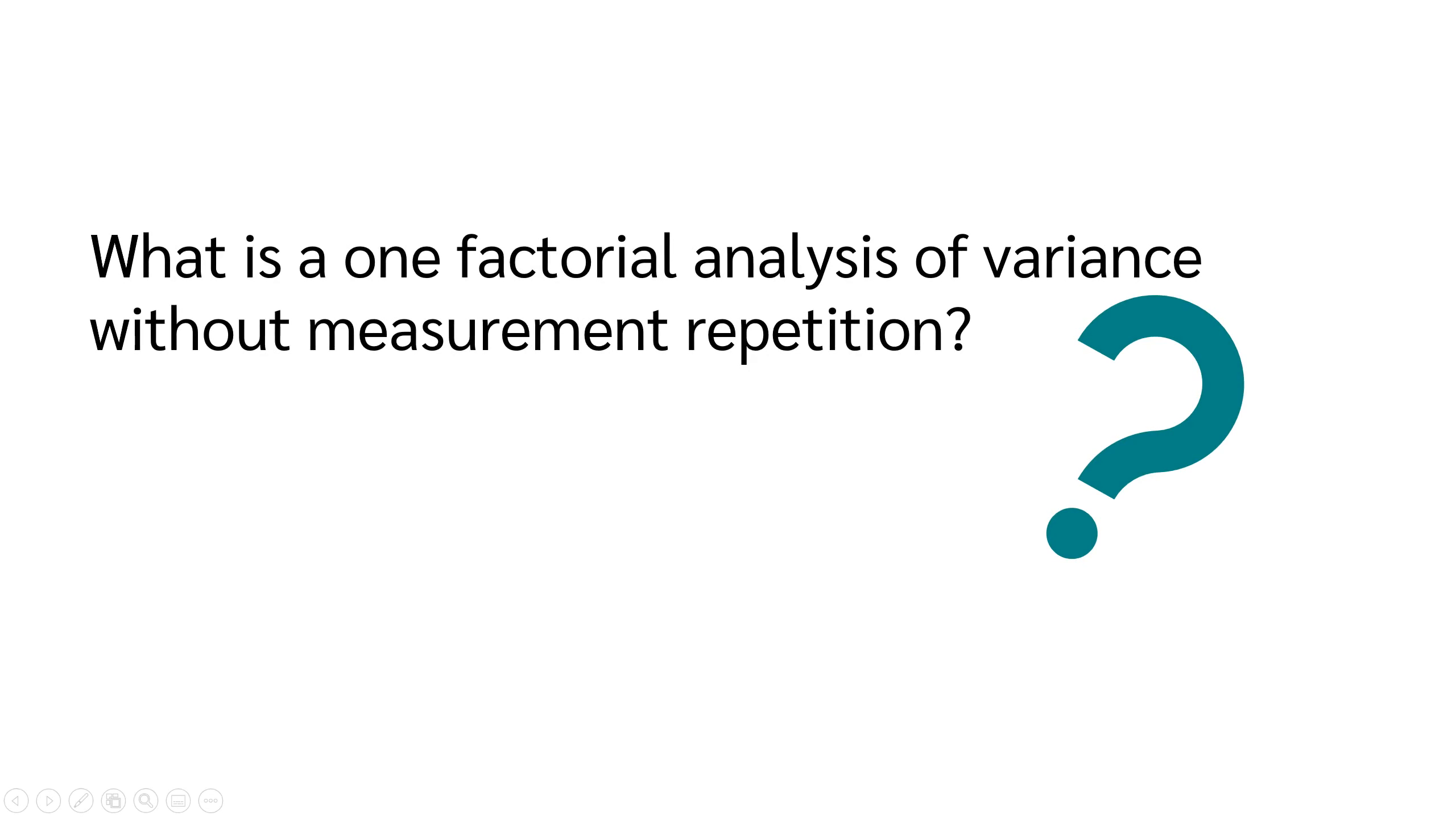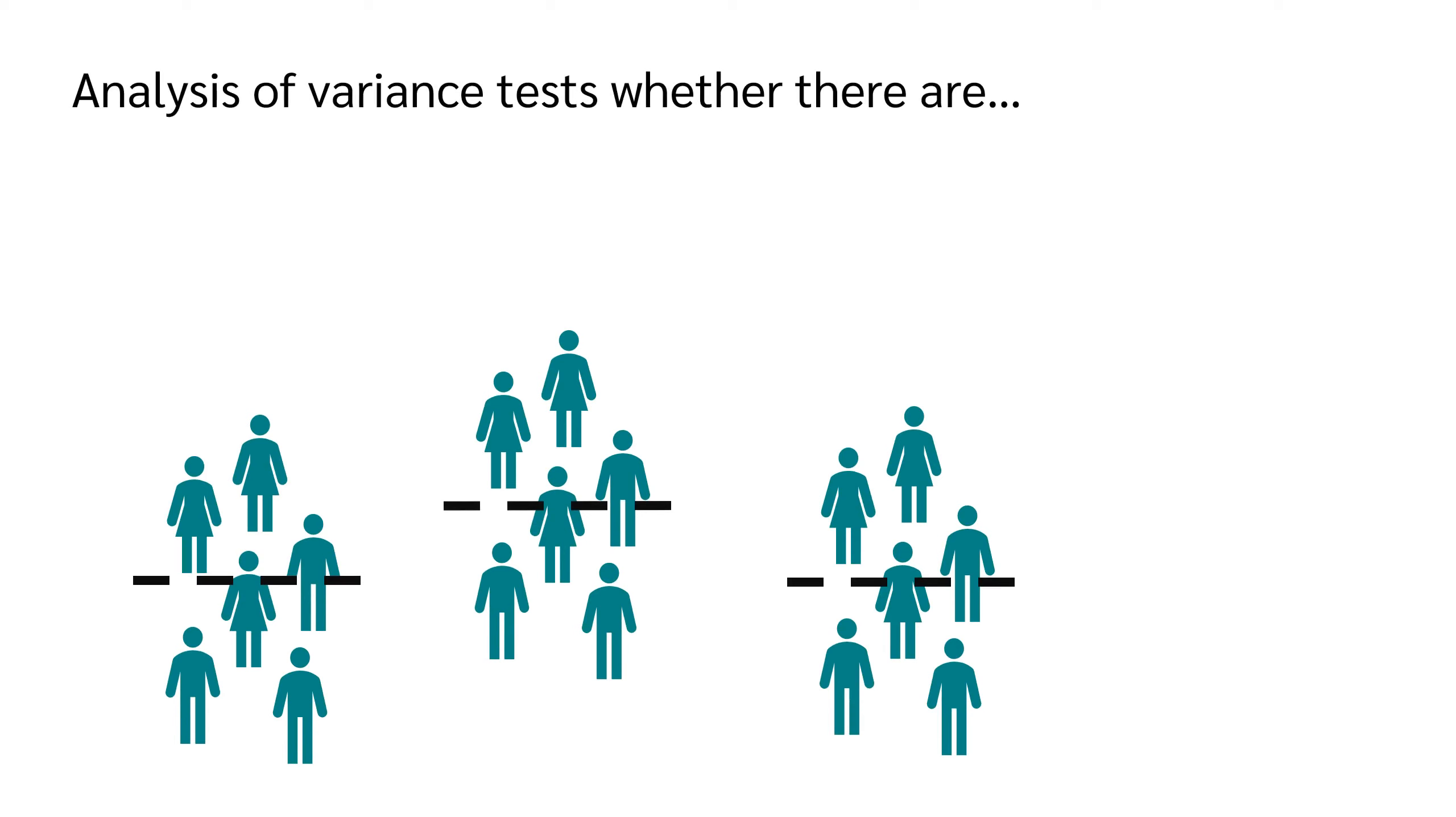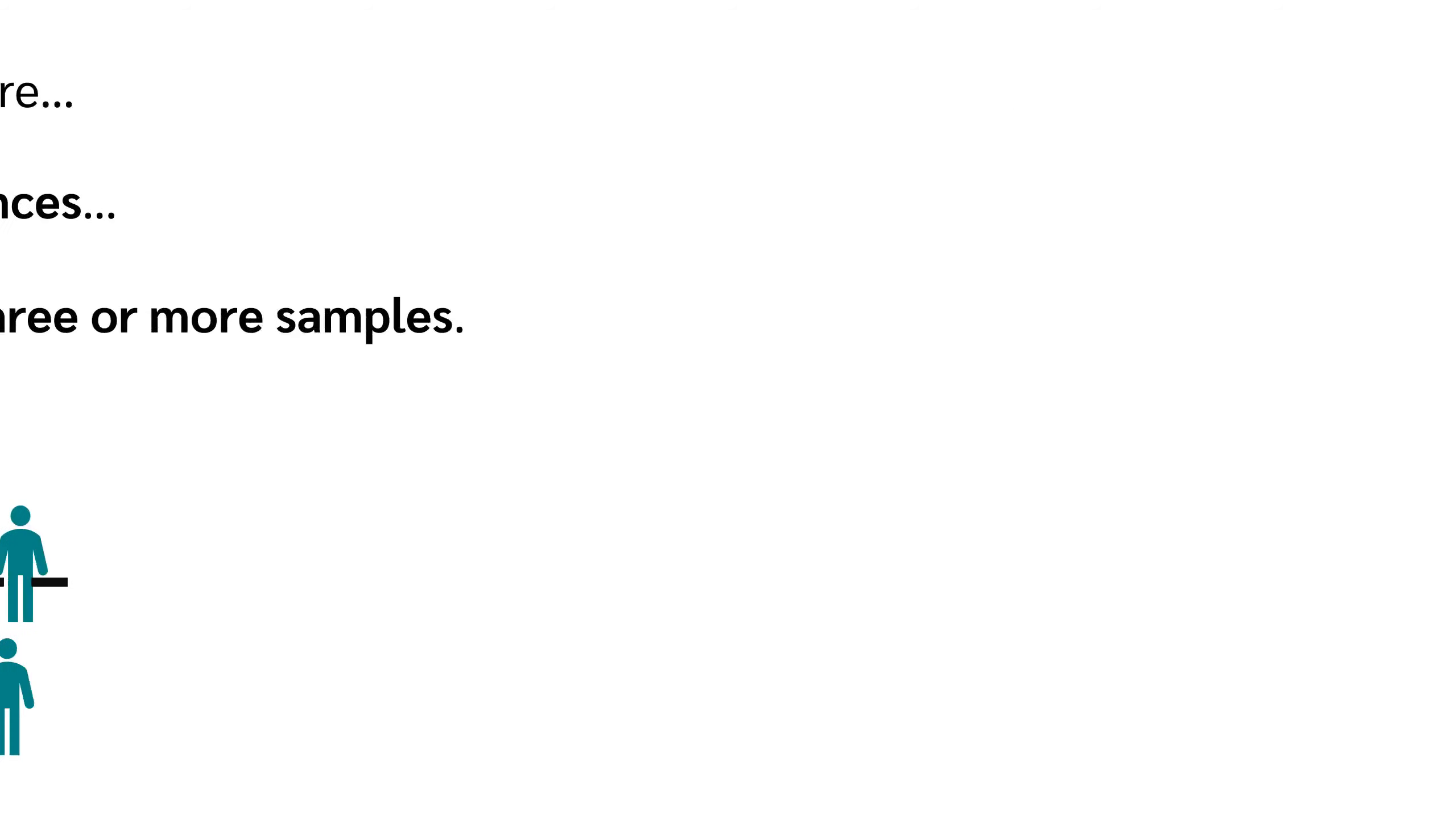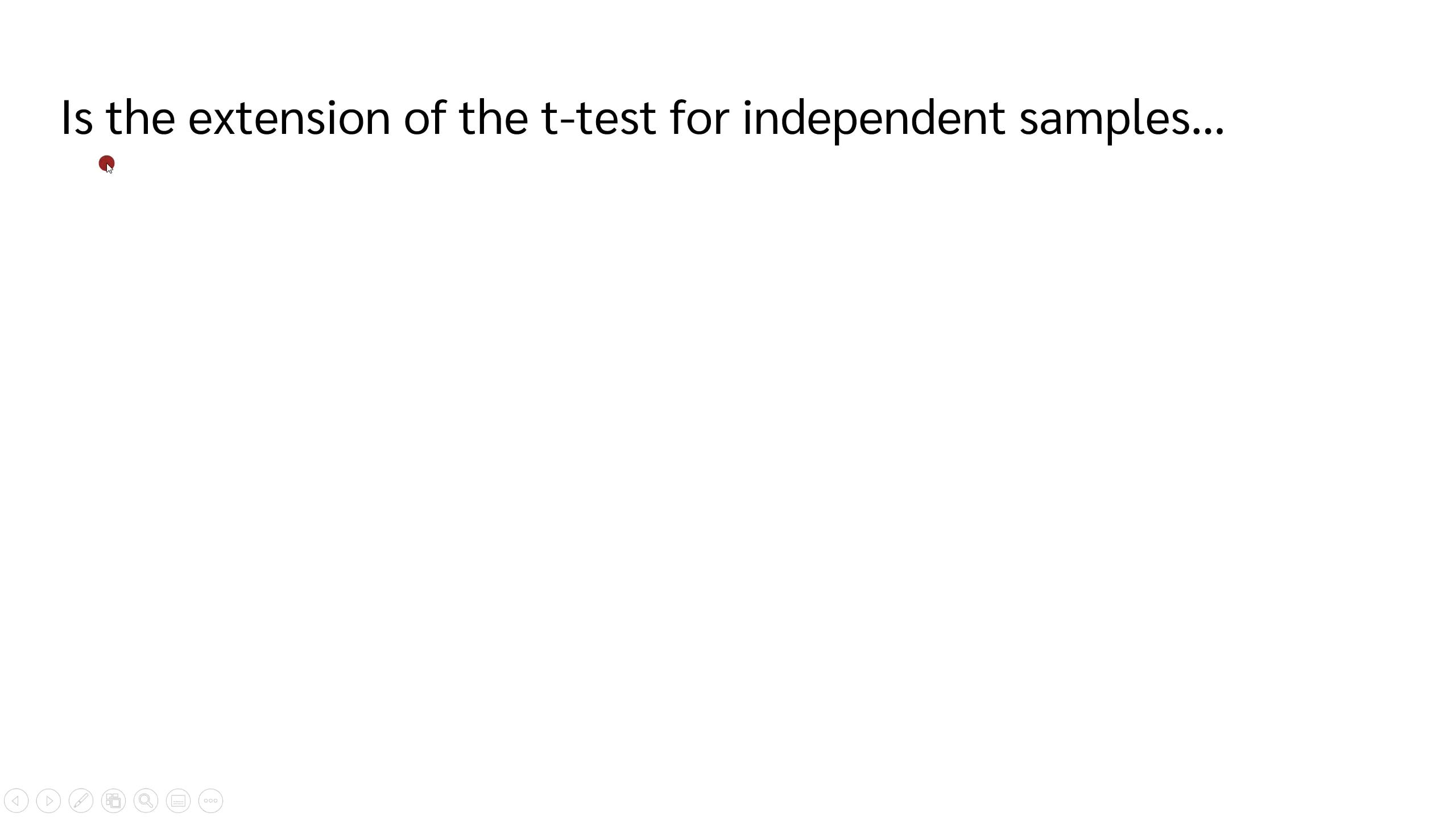The first question is why do you need an analysis of variance at all? What does an analysis of variance do? An analysis of variance checks whether there are statistically significant differences between more than two groups. Therefore, the analysis of variance is the extension of the t-test for independent samples to more than two groups.